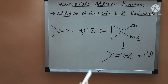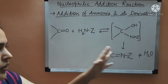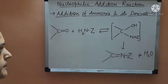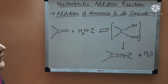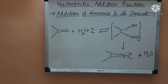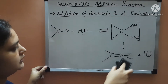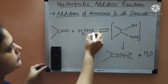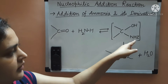You get the product, and based on the Z group we can have different names for this compound, where the carbon and nitrogen atoms are attached by a double bond. If the Z group is a hydrogen atom, then this is ammonia — that is, NH3. Here the Z group is hydrogen.